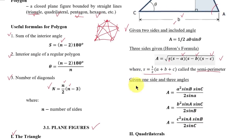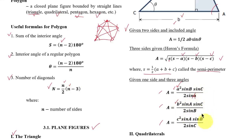Next formula: given one side and the three angles. If the given side is a, the area formula is: Area = a² × sin(B) × sin(C) / (2 × sin(A)). If the given side is b, then: Area = b² × sin(A) × sin(C) / (2 × sin(B)). Similarly for side c, sin(C) appears in the denominator. The difference between these three formulas is the side given and the angle opposite to it placed in the denominator.